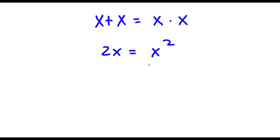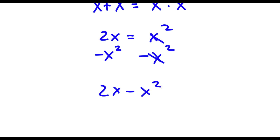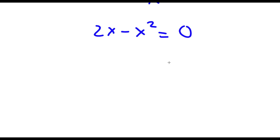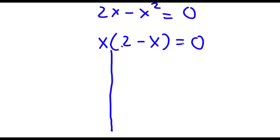So now I'm going to go ahead and subtract x squared on both sides. These two are going to cancel out and now I'm going to be left with 2x minus x squared is equal to zero. Now if I factor out x from here I get x times (2 minus x) is equal to zero. So now this is going to give me two equations.